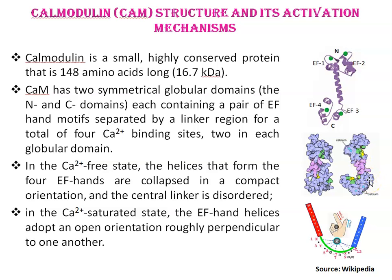EF-hand motifs. An EF-hand is a protein motif consisting of 30 amino acids that fold into a helix-loop-helix structure. Just look at this third diagram — it resembles a right-hand fist with the index finger and thumb extended. The index finger represents the N-terminal E-helix, and the thumb represents the C-terminal F-helix.